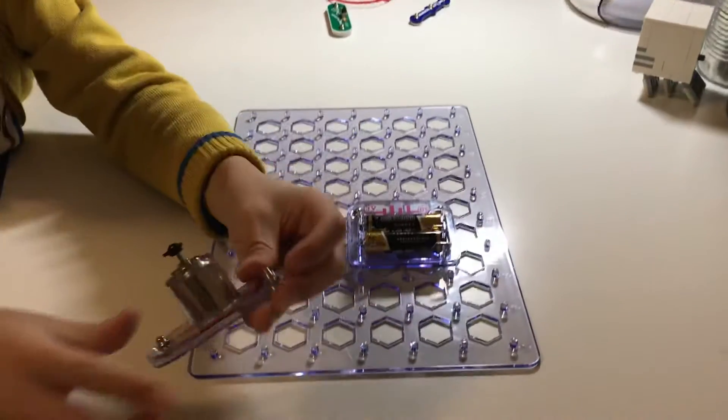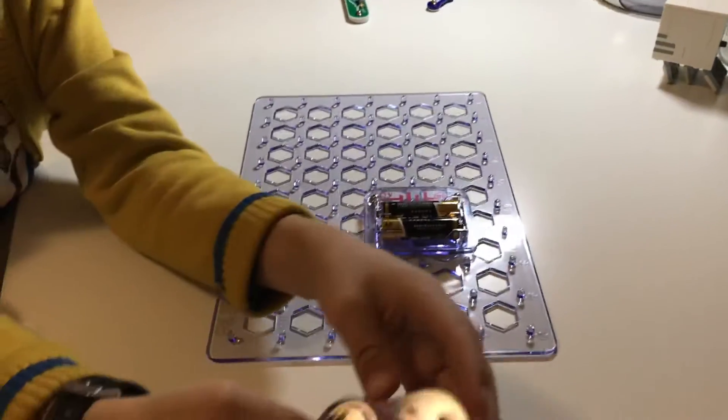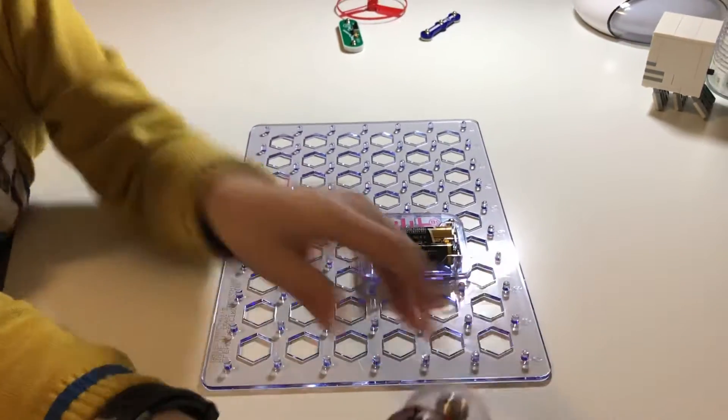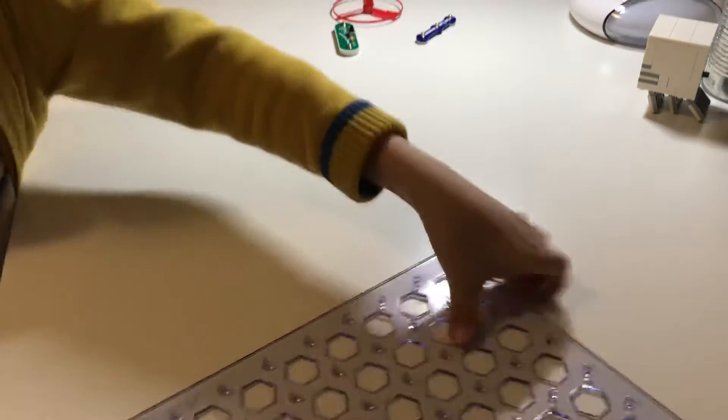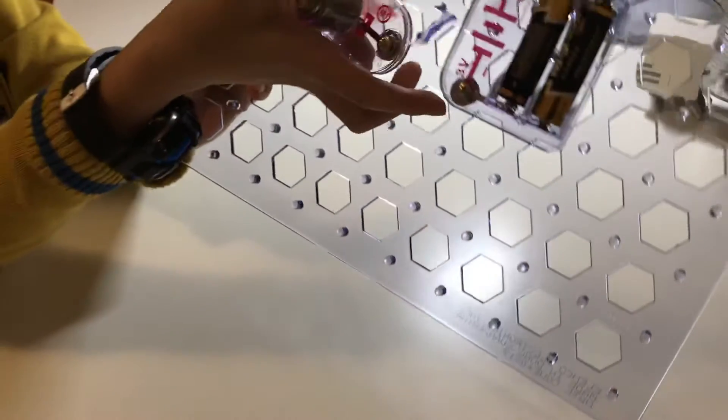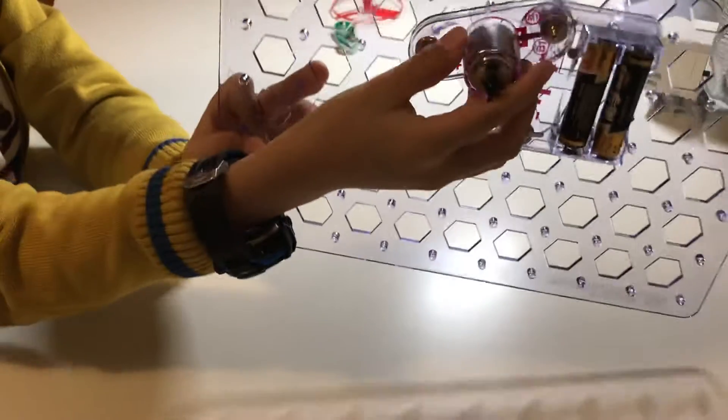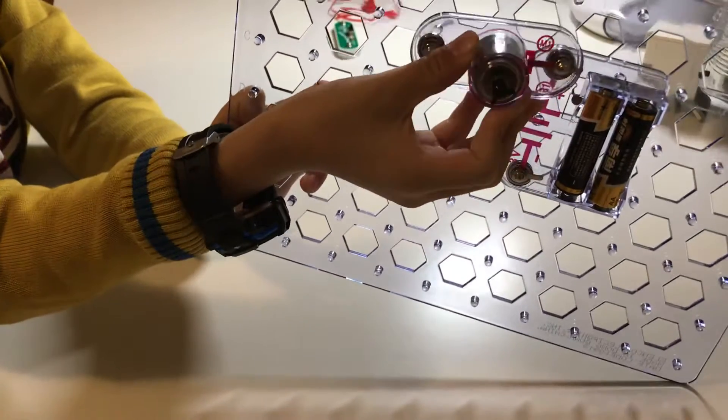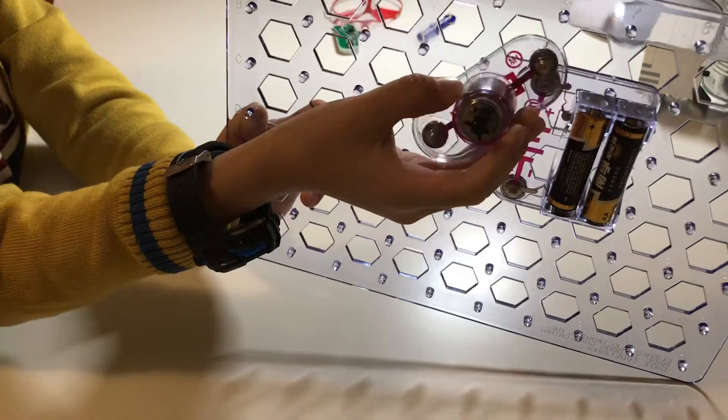Then you need this DC motor. You need to make the plus facing this side, otherwise it won't fly up.